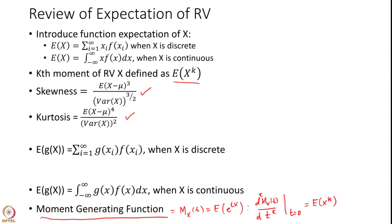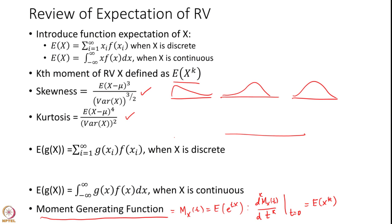Skewness defines whether your distribution is positively skewed, negatively skewed, or symmetric. In the case of kurtosis, it tries to see whether the tip is sharper than the normal or flatter. If it is sharper, the kurtosis will be more than 3; if it is flatter, it will be less than 3; and if it is a symmetric bell-shaped normal curve, it will be 3. We introduced those measures as well.